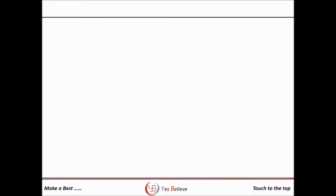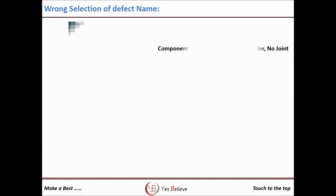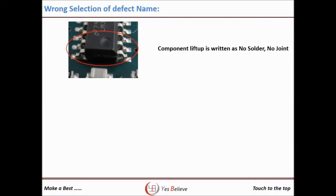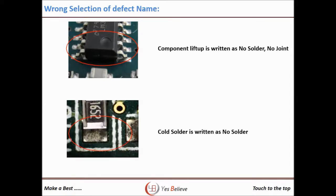As explained earlier, using the correct defect name while accumulating quality data is very important for analysis. If the wrong name is mentioned in the report, the analysis path will be wrong. For example, for IC pin lift up, most people write 'no solder' or 'no joint.' Similarly, cold solder is written as 'no solder.' No solder means solder is not available on the PCB pad, which points to a solder paste printing problem at the printer machine. But actually, lift up is due to lead bend — a handling issue — and cold solder is due to insufficient reflow oven temperature.